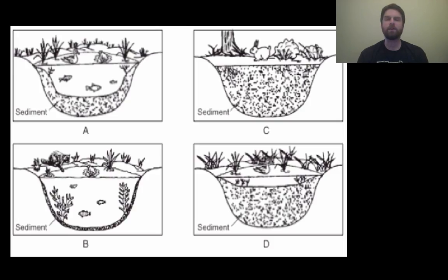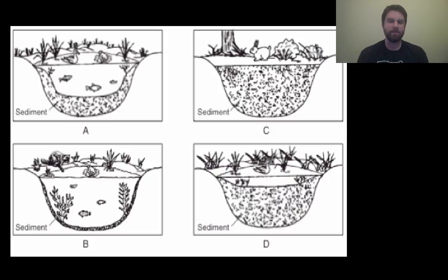Here's an example of succession in a pond — an aquatic ecosystem. In picture A you see a little pond with fish, a duck, a frog, and a certain amount of sediment. Pretty soon some of that sediment gives way to plant life, then the sediment increases, the pond gets covered up, and then the pond reforms. So we see a succession occurring in this pond.